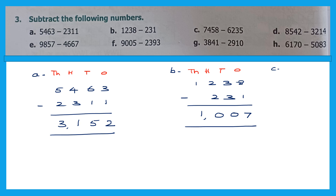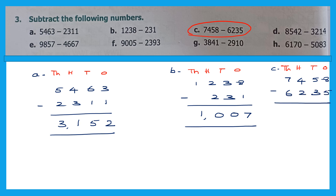Let's go to question C. Write the places: ones, tens, hundreds, thousands. The question is 7,458 minus 6,235. Ones: 8 minus 5 is 3. Tens: 5 minus 3 is 2. Hundreds: 4 minus 2 is 2. And 7 minus 6 is 1. The answer is 1,223.